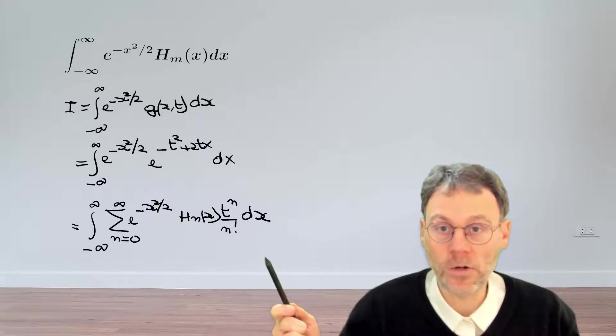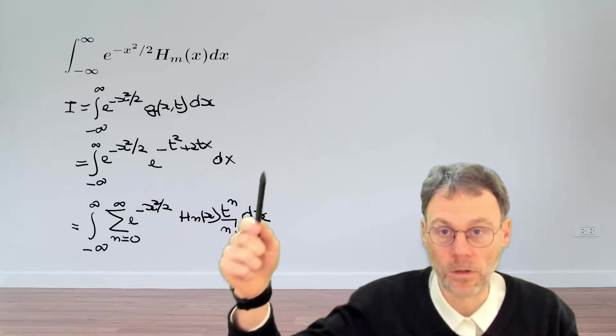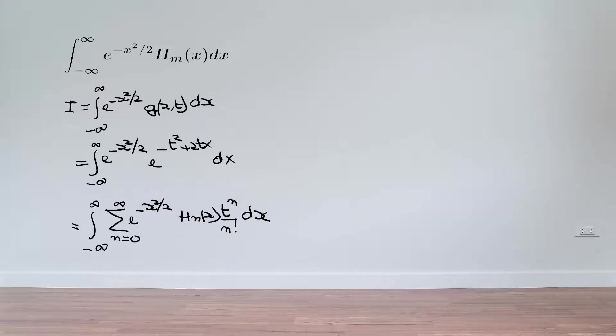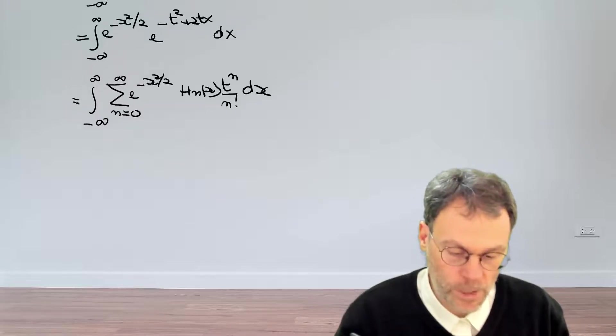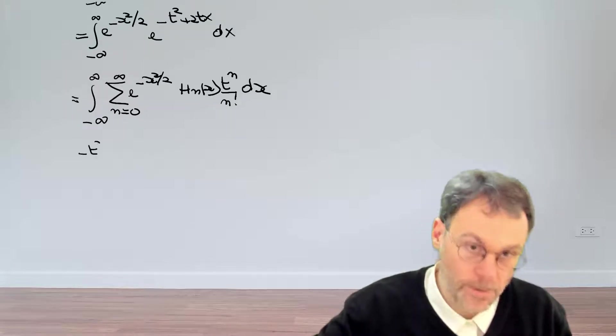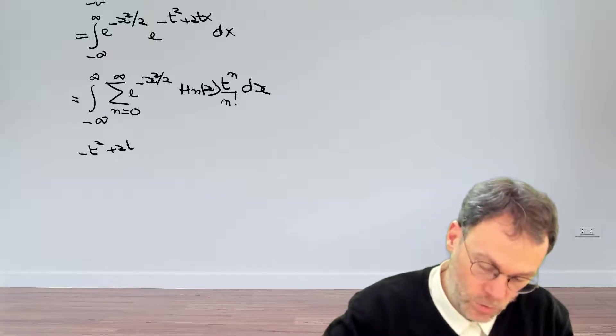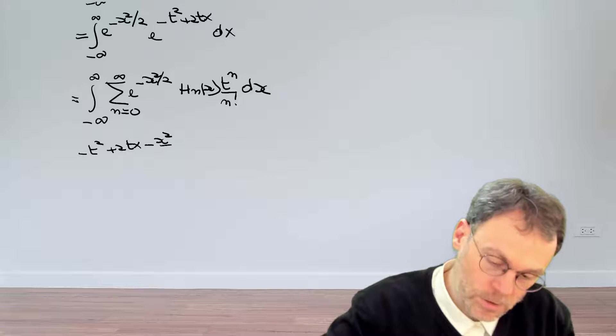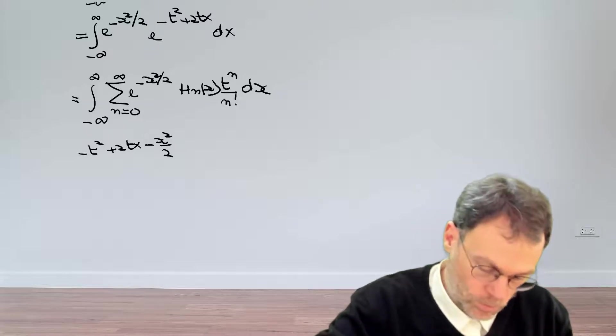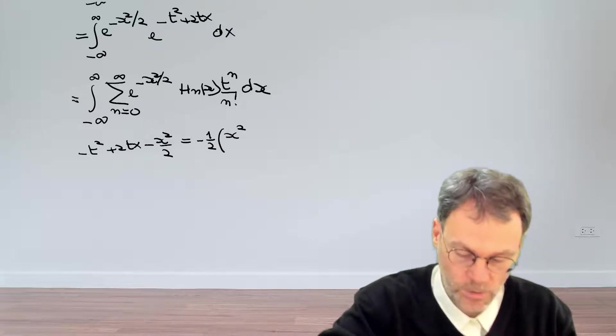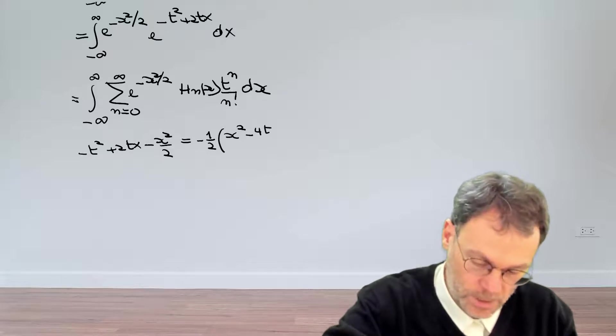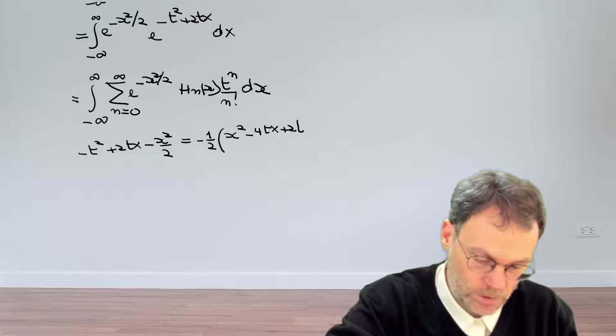So let's pause the video here and first of all try to calculate that integral using conventional techniques. So if we have a look at the argument of the exponential and if we rewrite this a little bit, that's going to be minus t squared plus 2tx minus x squared over 2. So, cleaning this thing up, bringing a minus one half in front, we have x squared minus 4tx plus 2t squared.